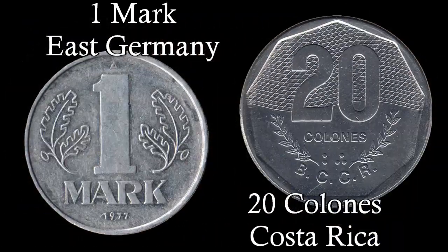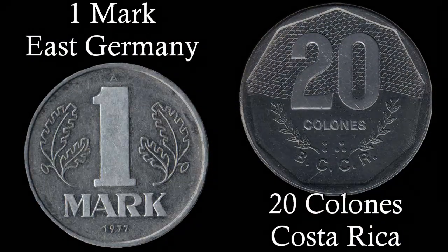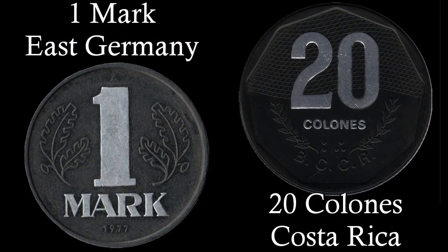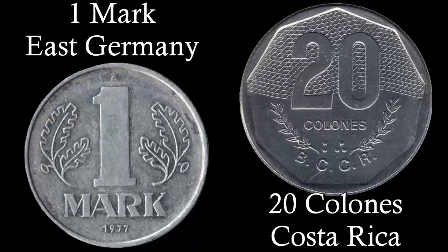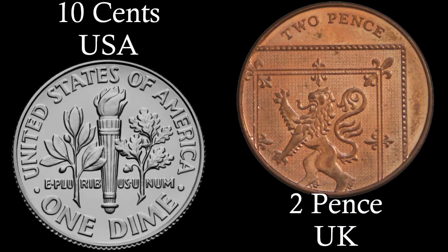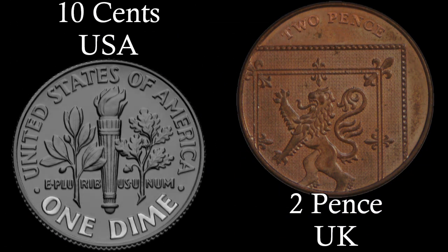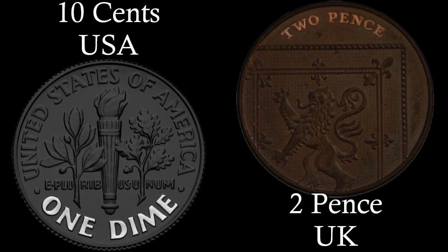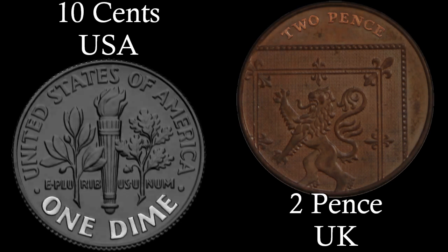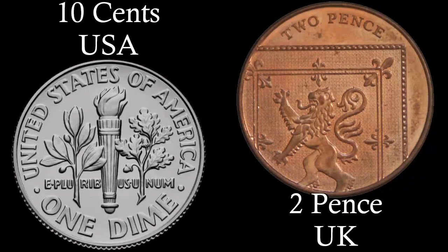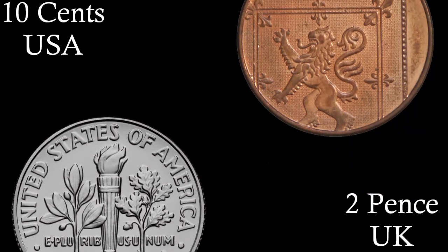The vast majority of all countries use numerals to represent the value of their currency to accommodate for illiteracy. Some countries, such as the United States and the United Kingdom, spell out the denominations on their coins instead.